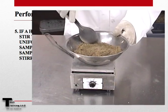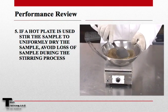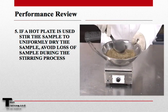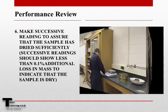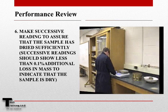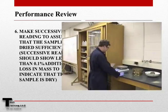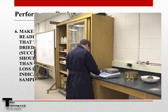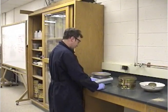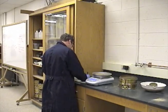If a hot plate is used, stir the sample to uniformly dry it, avoiding loss of material during the stirring process. After heating, make successive readings to ensure that the sample has dried sufficiently. Successive readings should show less than 0.1% additional loss in mass to indicate that the sample is dried sufficiently.